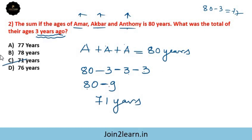80 minus 9 equals 71 years. Option C is the right answer. For each person, we subtract the number of years ago from the total sum — subtracting 3 for each of the three people gives 9 total subtracted.